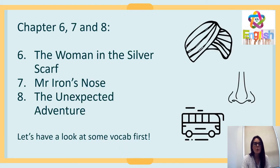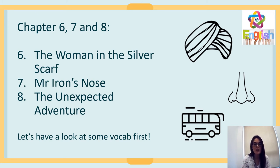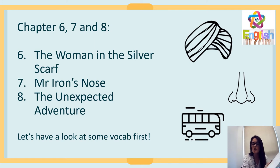Today we're going to be looking at three chapters: six — 'The Woman in the Silver Scarf,' seven — 'Mr. Irons' Nose,' and eight — 'The Unexpected Adventure.' There are six big words that we need to look at today, so we're going to start with those.